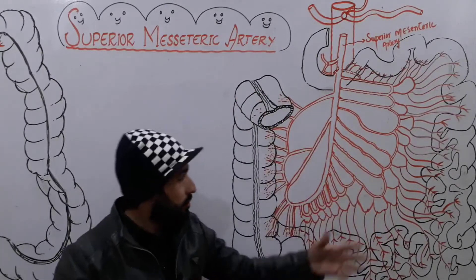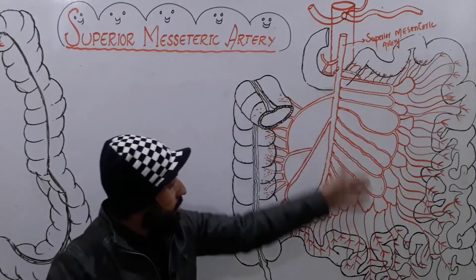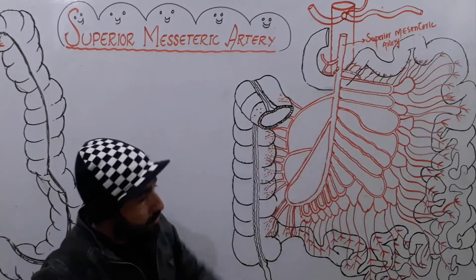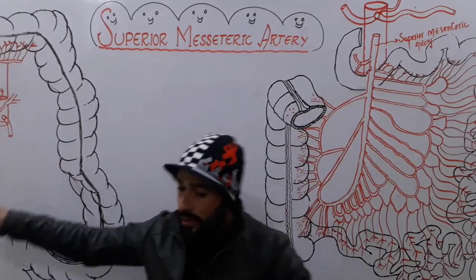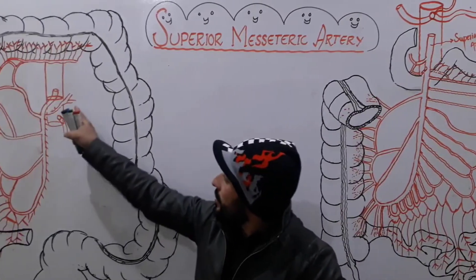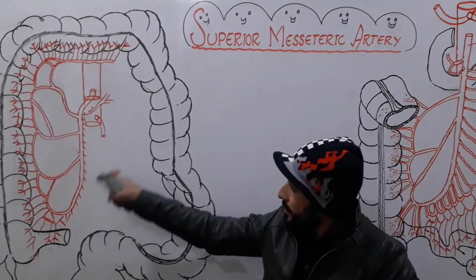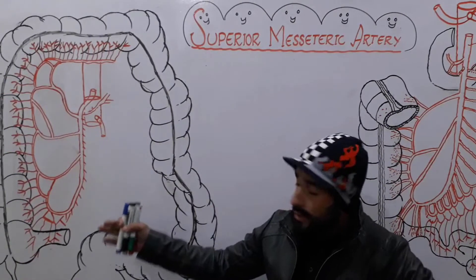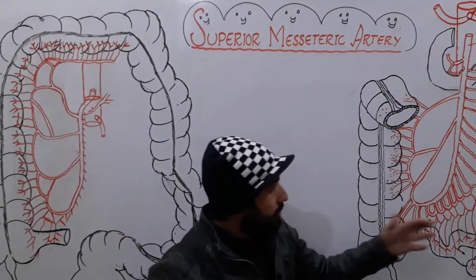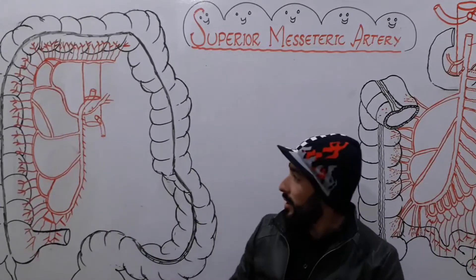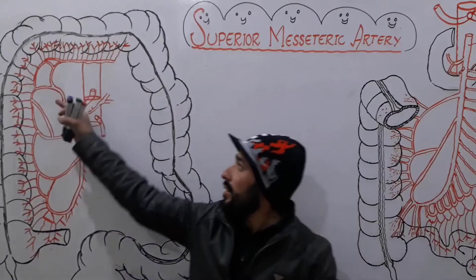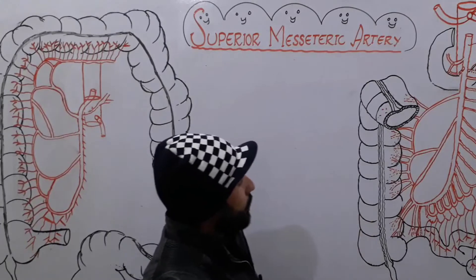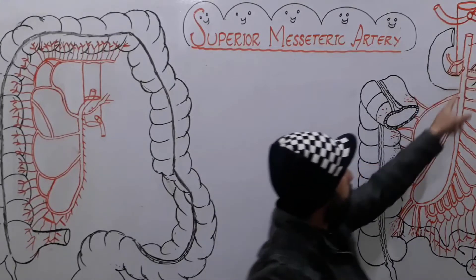On the left side of me on the whiteboard you can see the branches, which I will show and discuss. On our right side I have drawn the same artery to show the posterior and anterior aspects of this artery.